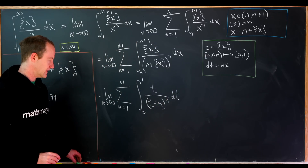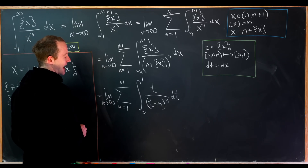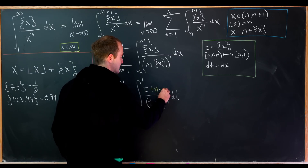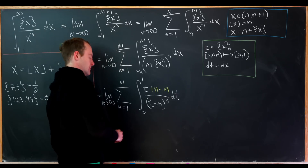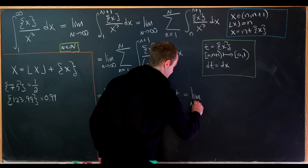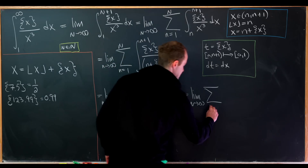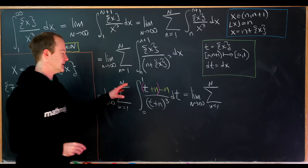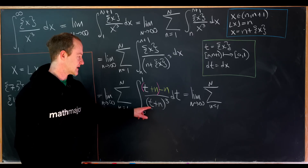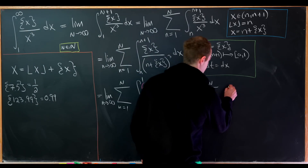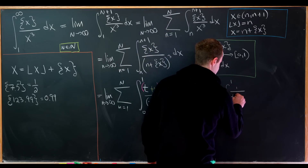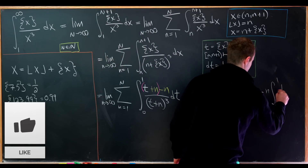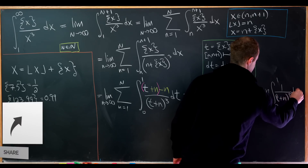The integral becomes the limit as N goes to infinity of the sum from n=1 to N of the integral from 0 to 1 of T over (T+n) cubed dT. To take this antiderivative, we add a nice copy of 0 to the numerator — we write T as (T+n) minus n. That splits this into two integrals: the integral from 0 to 1 of 1 over (T+n) squared dT, minus n times the integral from 0 to 1 of 1 over (T+n) cubed dT.